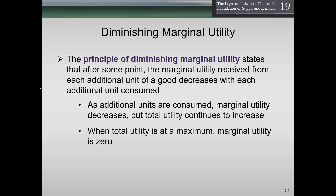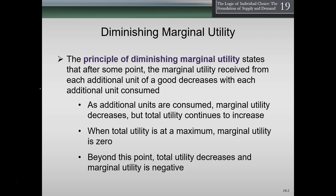When total utility is at a maximum, marginal utility equals zero. That means when we get to that point where the next piece of pizza gives us no more utility, no more happiness, no more satisfaction, marginal utility is now zero — the next piece of pizza is going to give us no more benefit.